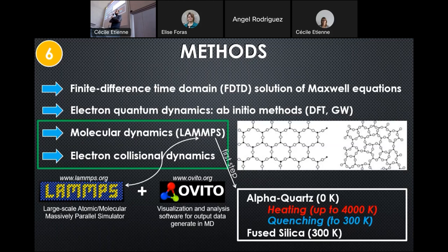To start our simulation, firstly we need to have a good input structure which should be fused silica. How to obtain that? We do the standard heating quenching process. Firstly, we take a very little structure of alpha-quartz which consists of nine atoms: three silicon and six oxygen atoms. We replicate it in all three directions by a factor of five or six to obtain at least two thousand atoms.